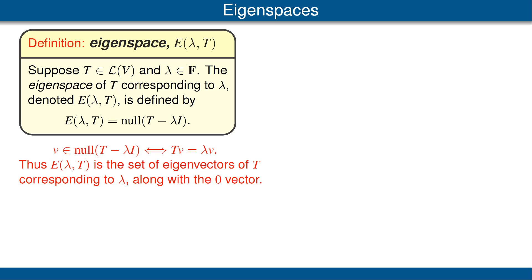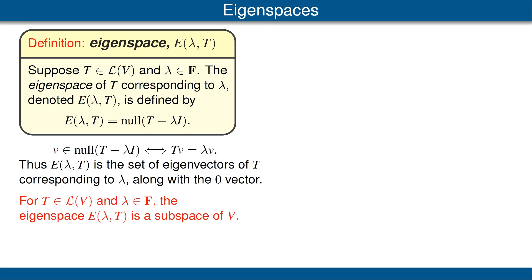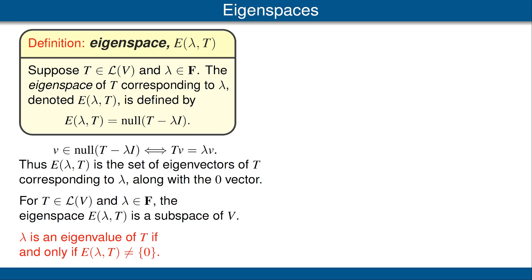Recall that by definition, 0 is not an eigenvector of t. Because the null space of every operator on v is a subspace of v, we can conclude that the eigenspace e of lambda t is a subspace of v. It's quite clear from the definitions that a number lambda is an eigenvalue of t if and only if the eigenspace e of lambda t is not the 0 subspace.